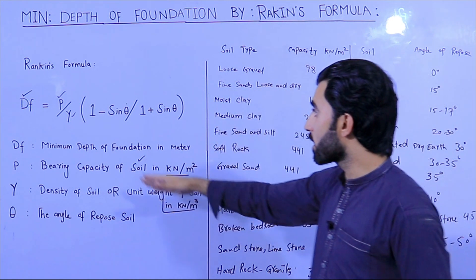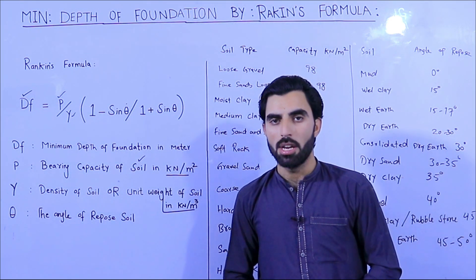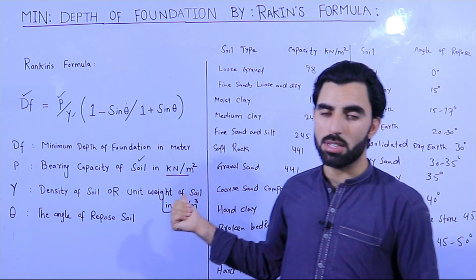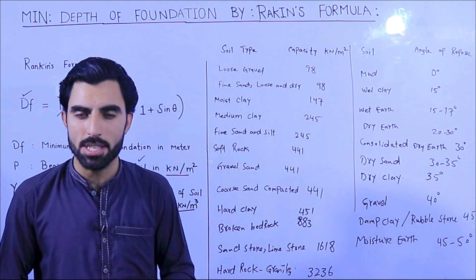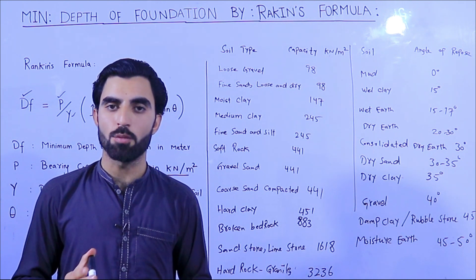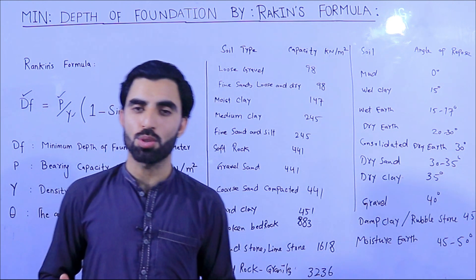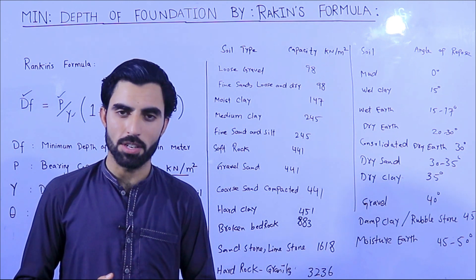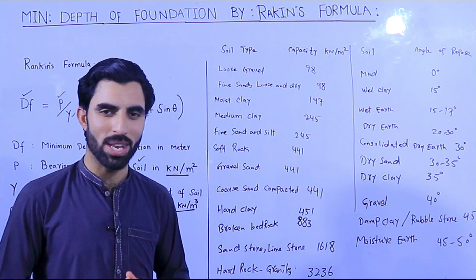So this is very simple to find the minimum depth of foundation. I recommend that if you don't want to apply Rankine's formula, the minimum depth of foundation should not be less than one meter. The structure will be safe when you keep the minimum depth of foundation at one meter. If it is a mega project, you should find the suitable depth using the proper formula. If you have any questions, please comment — I will try to reply. Thanks for watching, see you in the next video.